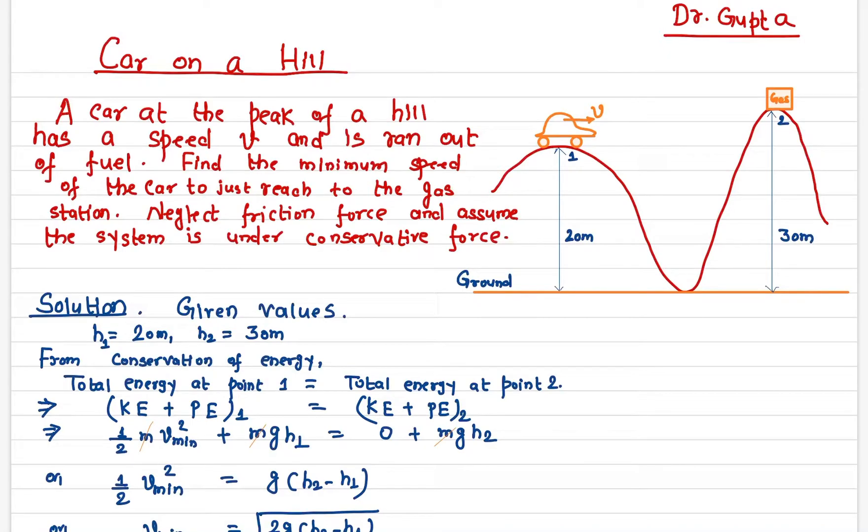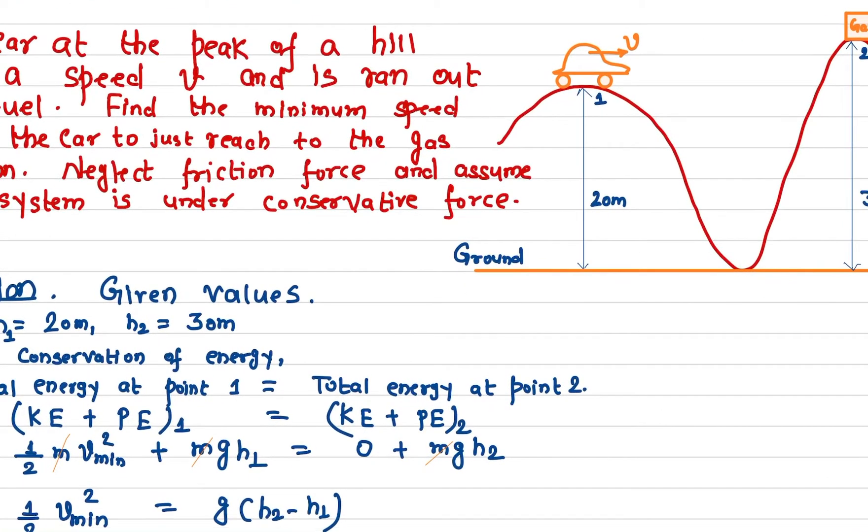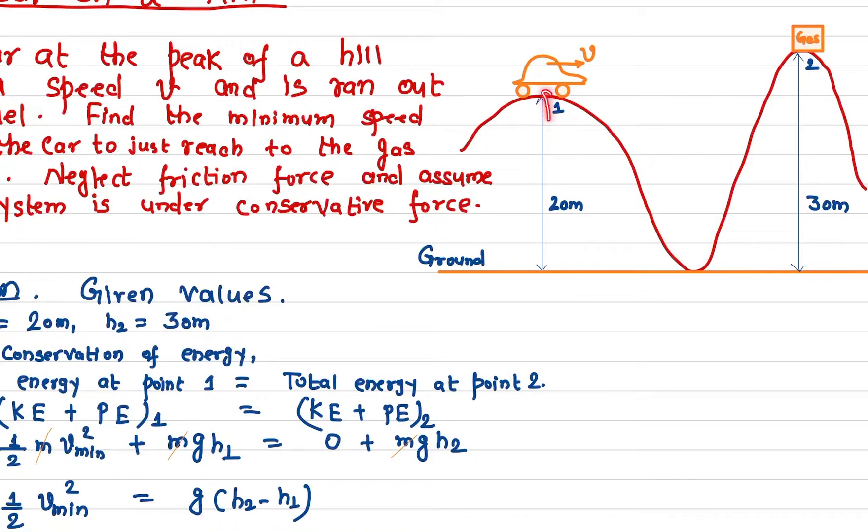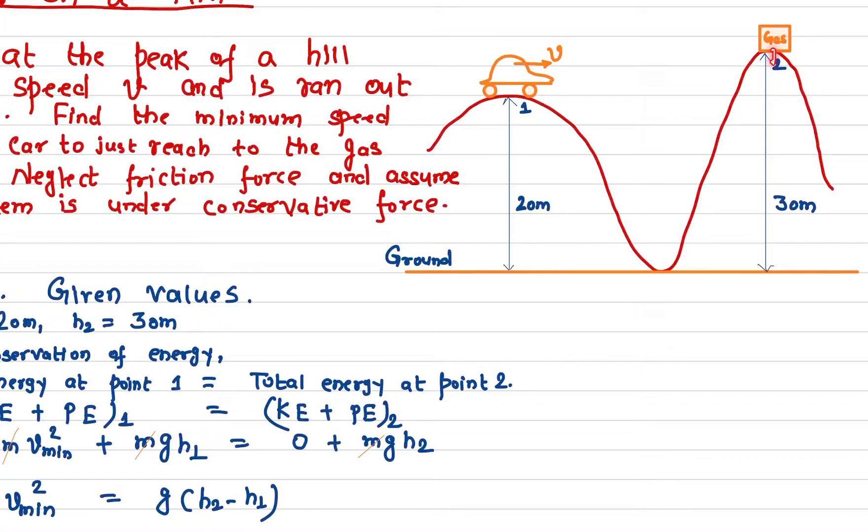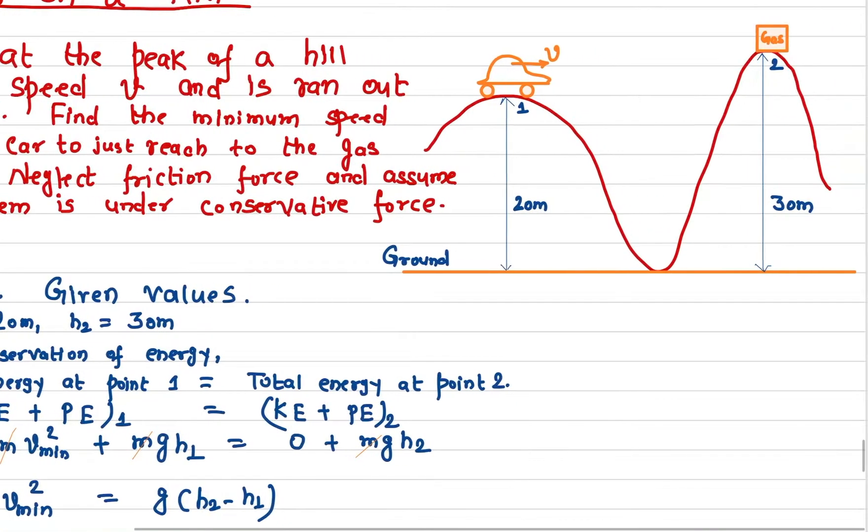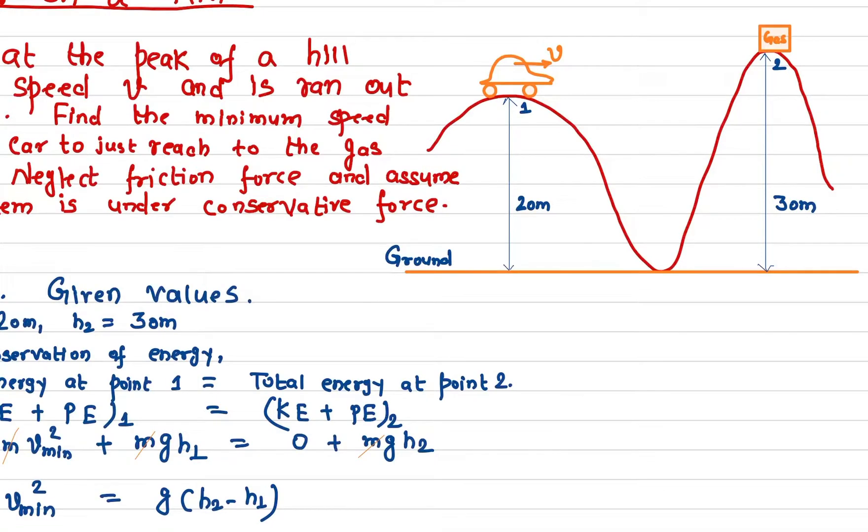The height of this hill onto which the car is, is 20 meters, and the gas station is at the height of 30 meters. If this is a conservative field, the total energy at any point must be exactly the same.